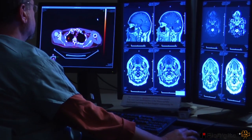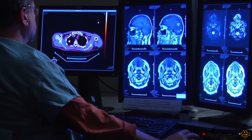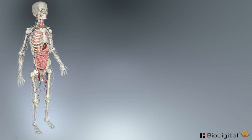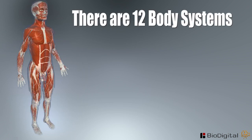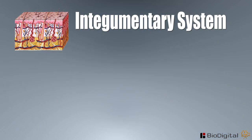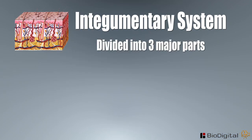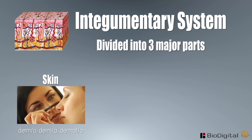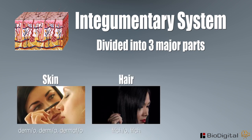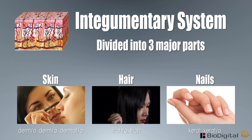Now that we have completed the mapping of the body, we will now begin our journey through each of the body systems, of which there are twelve. Our first journey begins with the integumentary system. This body system is divided into three major parts: the skin, the hair, and the nails.